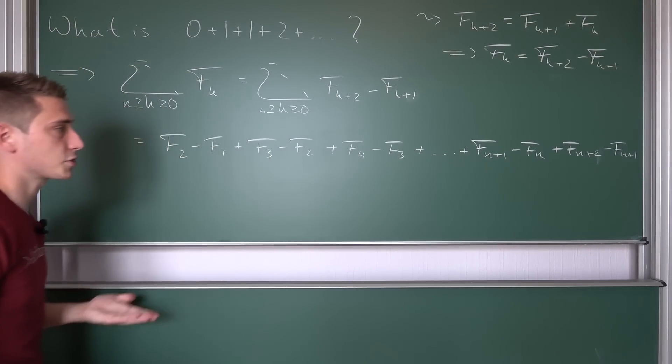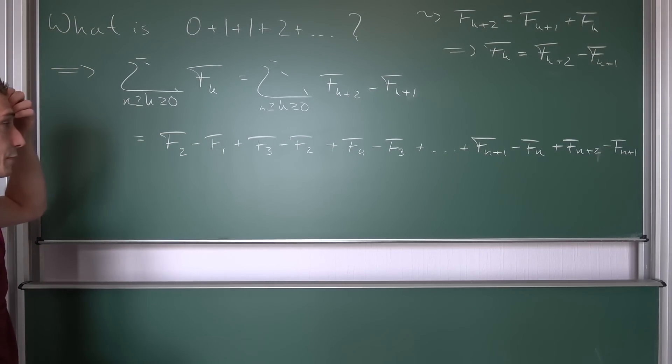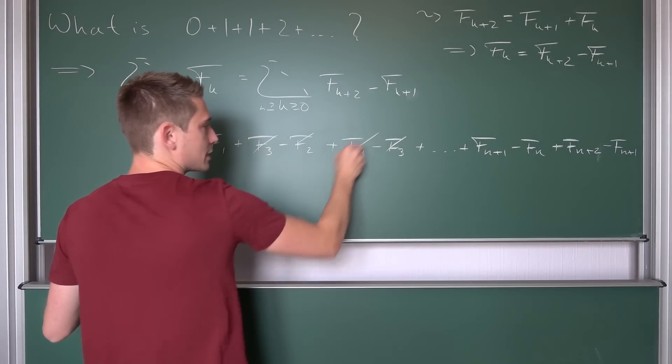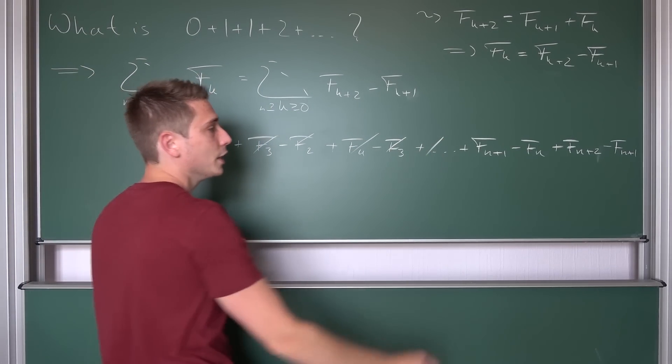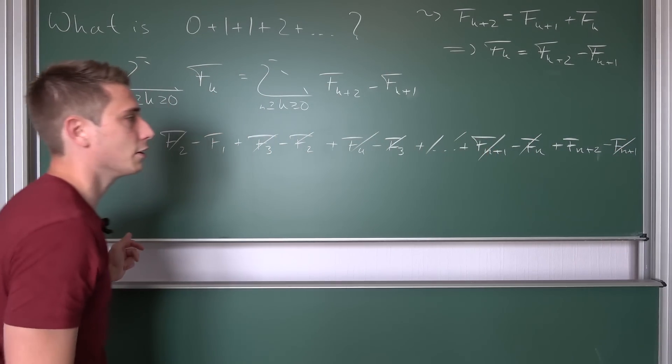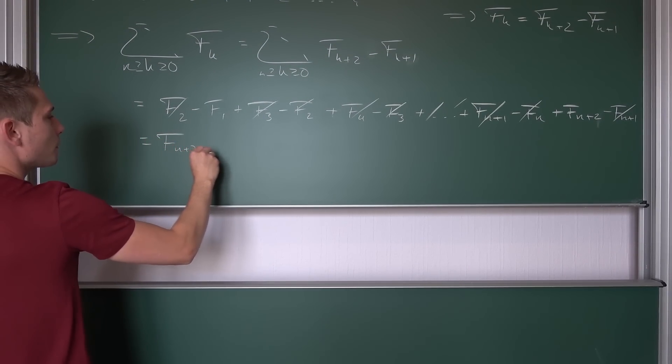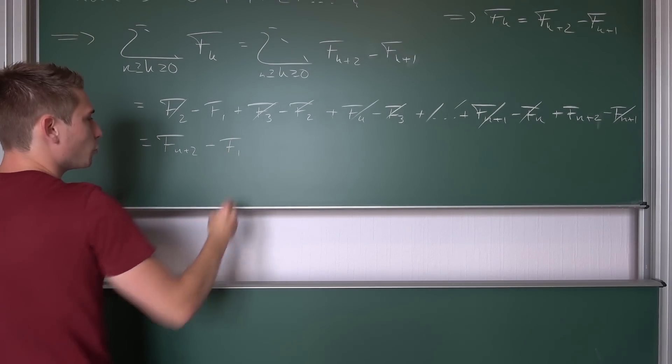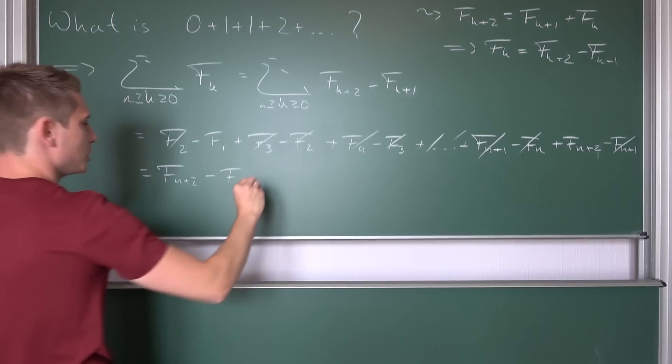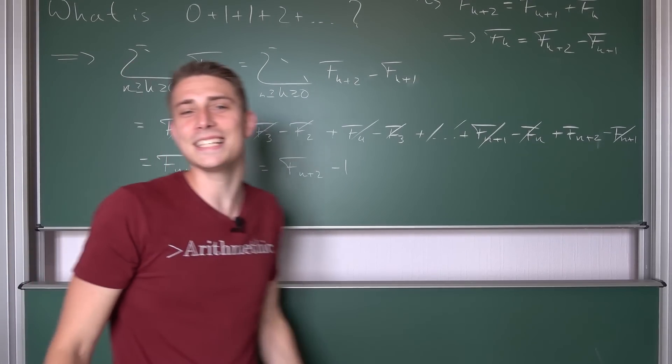And now you can see that a lot of stuff is going to cancel out. It's a telescoping sum that we are having here. F2 and F2 is going to cancel out. F3 and F3 is going to cancel out. F4 and F4 is going to cancel out. Also, Fn+1 and Fn+1 are going to cancel out. Obviously, Fn and Fn are going to cancel out, leaving us with simply Fn+2 minus F1. And F1 is exactly the first Fibonacci number, which is 1. Fn+2 minus 1. And it was really easy, right?